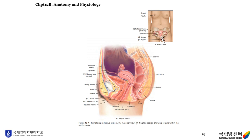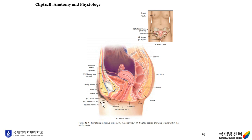This figure shows the female reproductive system. Figure A shows the anterior view and B shows the sagittal section showing organs within the pelvic cavity. The anterior view shows the breast, nipple, ovary, fallopian tube, uterus, and vagina. Figure B shows the ovary, fallopian tube, uterus, cervix, vagina, Bartholin's gland, and perineum. Surrounding organs include the rectum, anus, urinary bladder, pubis, and urethra. You can also see the clitoris, labia minora, and labia majora.